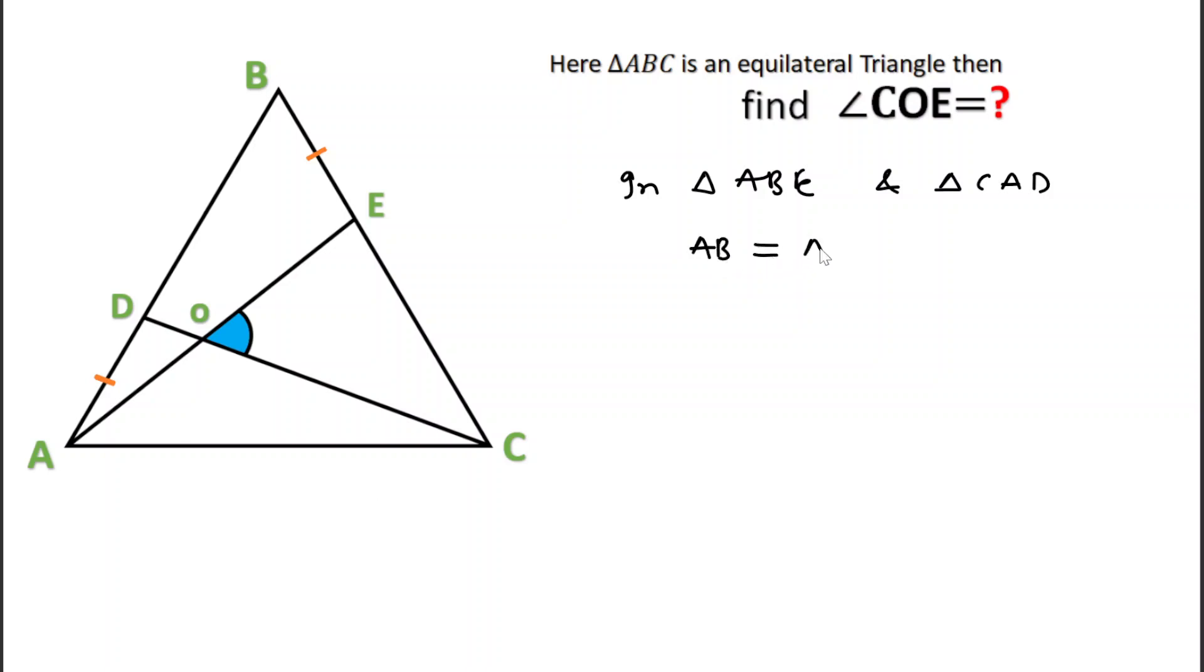AB is equal to AC because AB and AC are the sides of equilateral triangle, so these two will be equal. And also it is given AD is equal to BE.